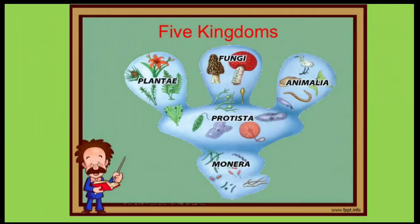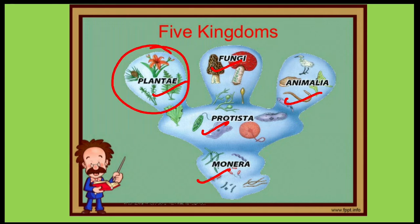According to W.H. Whittaker 1969, all living organisms are classified into five kingdoms: Monera, Protesta, Plantae, Fungi and Animalia. So where does the Phanerogamic Plant Parasite belong? It belongs to Plantae.